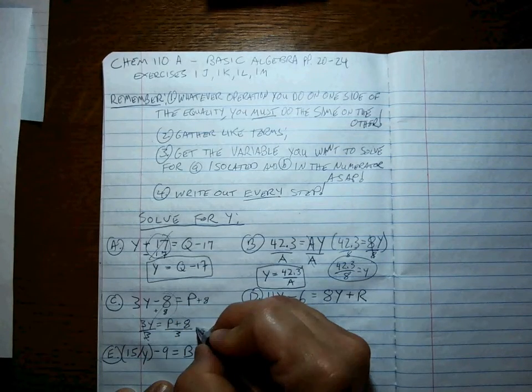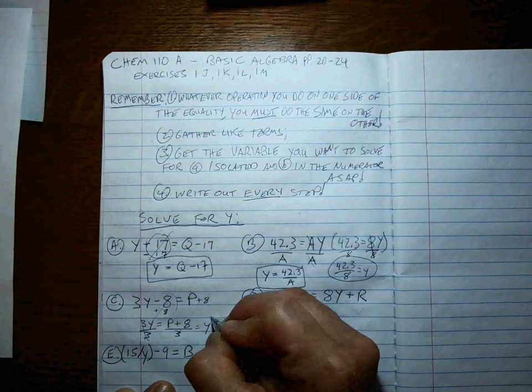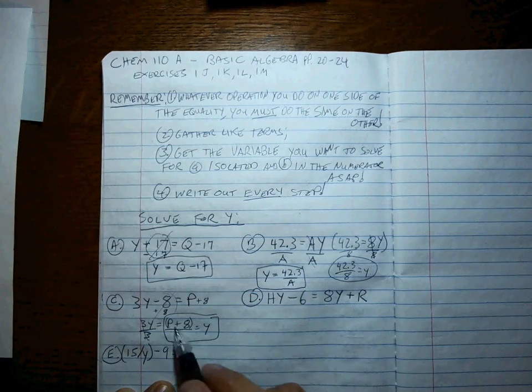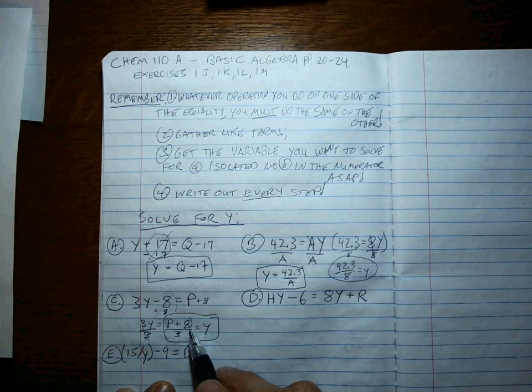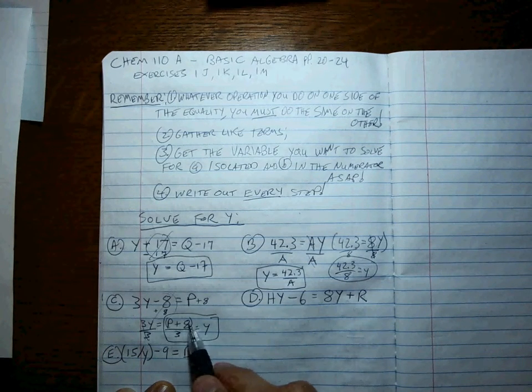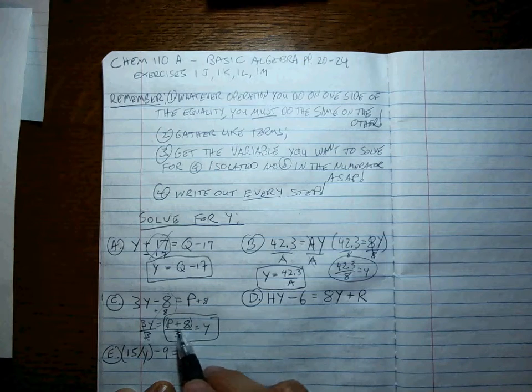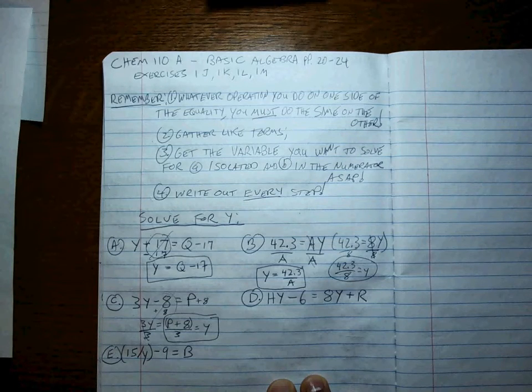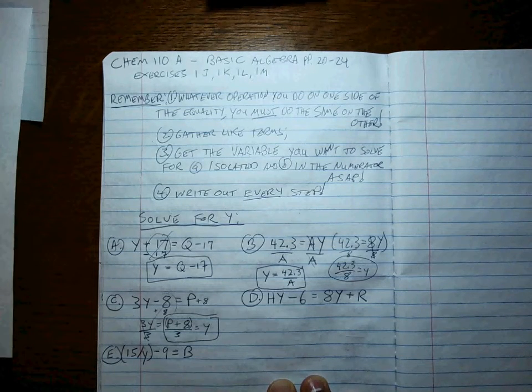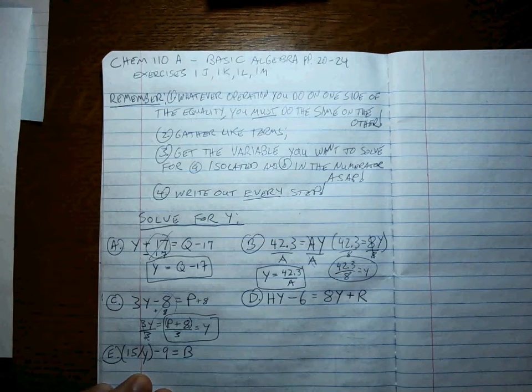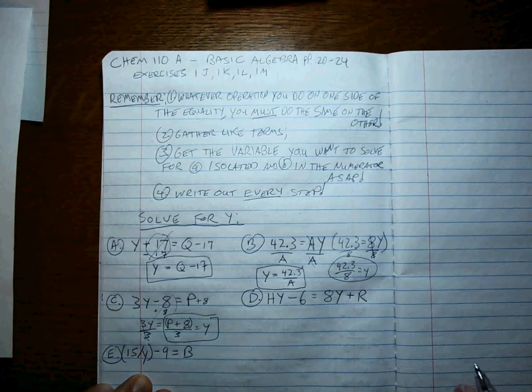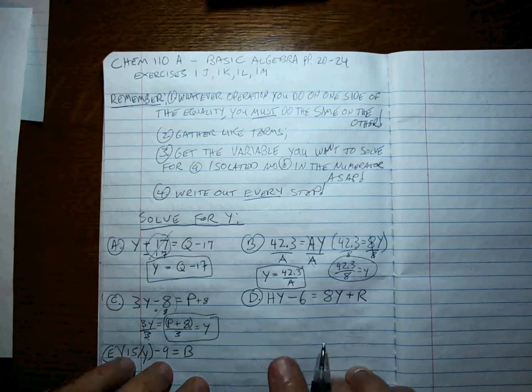That cancels out. And Y is equal to, you can put them in parentheses if you want, P plus 8, the entire parentheses information divided by 3. That's what Y is equal to. Man, I'm telling you, I know you can do this. This is not hard. But if you try to do a 3-step problem in your head, you'll mix it up. Instead, write out the results each step along the way. It will keep you from making a mistake and it won't take that long.